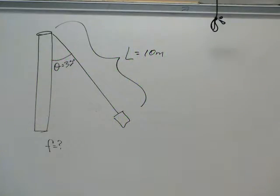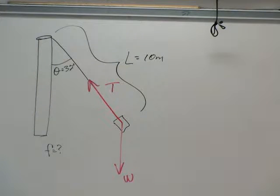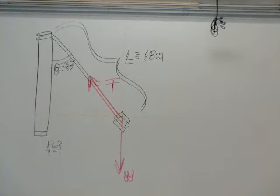Determine the frequency of the swing ride as it goes around, given an angle of 32 degrees. These are the forces that are indicated: tension and the weight.